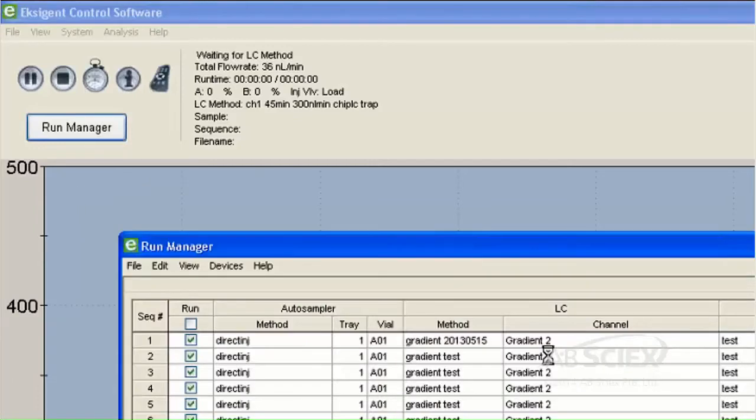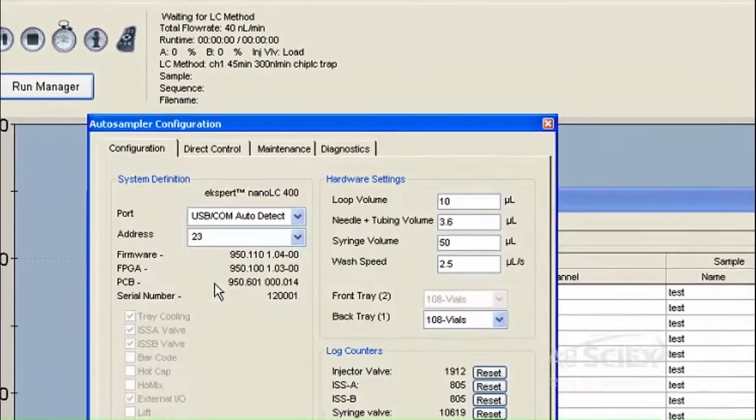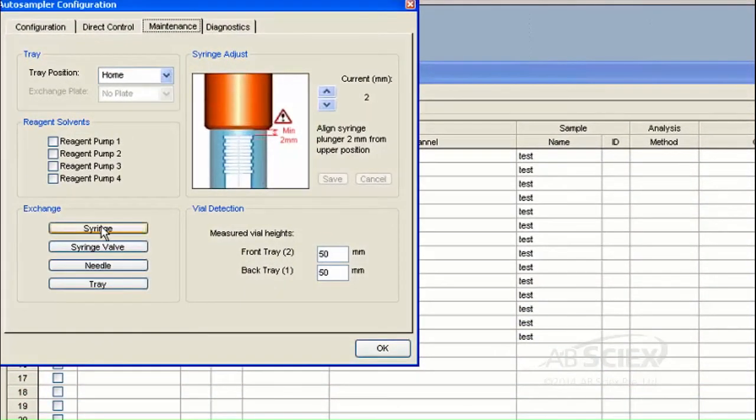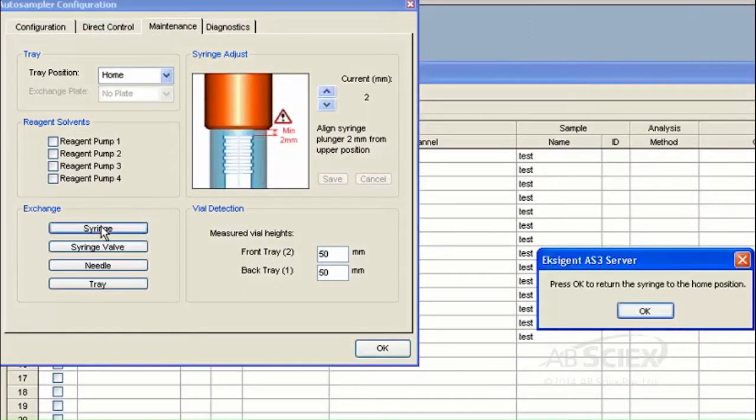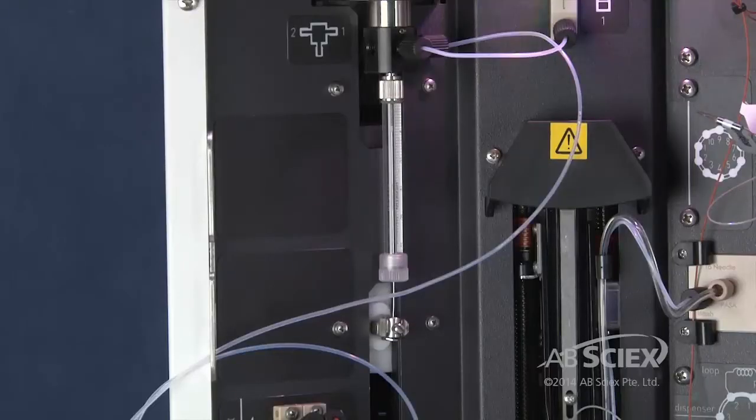Using the Auto Sample Configuration window, click the Maintenance tab, Exchange Group. Click the Syringe button. This will move the plunger to a position that makes removal of the syringe easy.